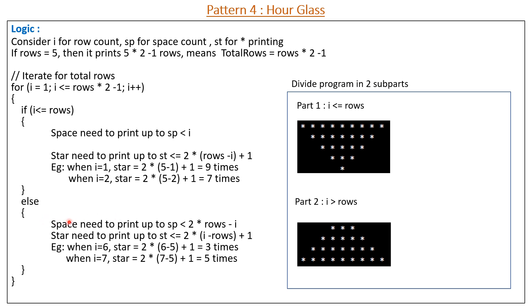For Part 2 (I greater than rows), spaces are printed up to 2 multiplied by rows minus I, and stars are printed up to ST less than or equal to 2 multiplied by (I minus rows) plus 1. The star formula is the same structure as Part 1, but since in Part 1 the rows value is greater we subtracted I from rows, whereas here I is greater so we subtract rows from I. When I equals 6: 2 multiplied by (6 minus 5) plus 1 equals 3 stars. When I equals 7: five stars. So our logic is correct.